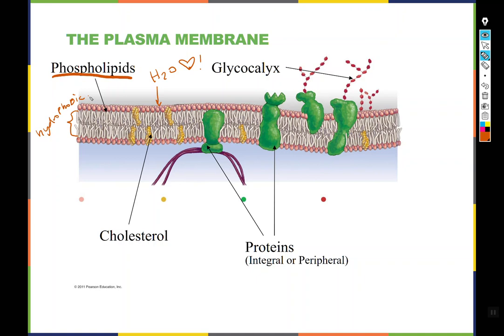That creates some rules about membrane crossing that we'll address later. In this picture, you can also see some other elements. There is a fair amount of cholesterol in this membrane, and cholesterol can be used to stabilize, stiffen, or change the fluidity of a given membrane. Different cells are going to have varying amounts of cholesterol according to what their membrane needs are. There are also proteins, represented here in green, and these are going to be either peripheral or integral. A peripheral protein is on the membrane but on one or the other side of it. An integral protein sticks into the membrane or even goes all the way through.